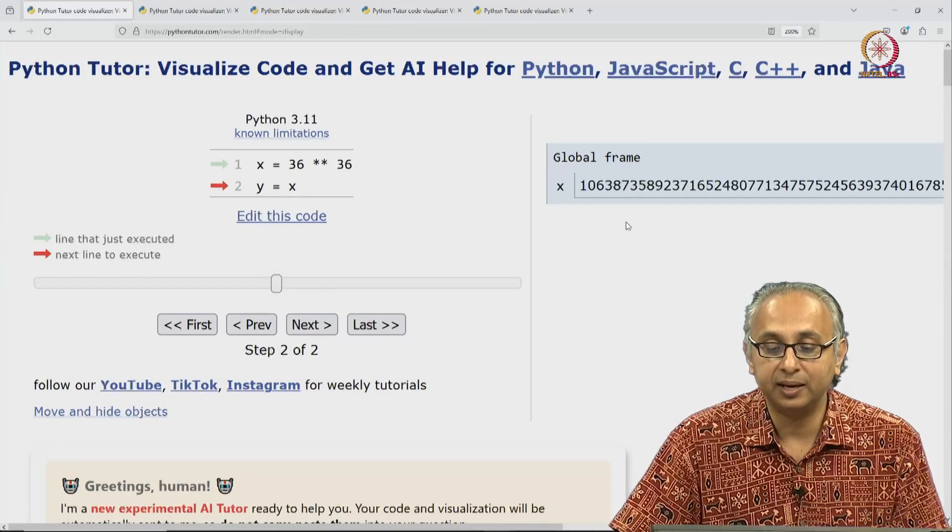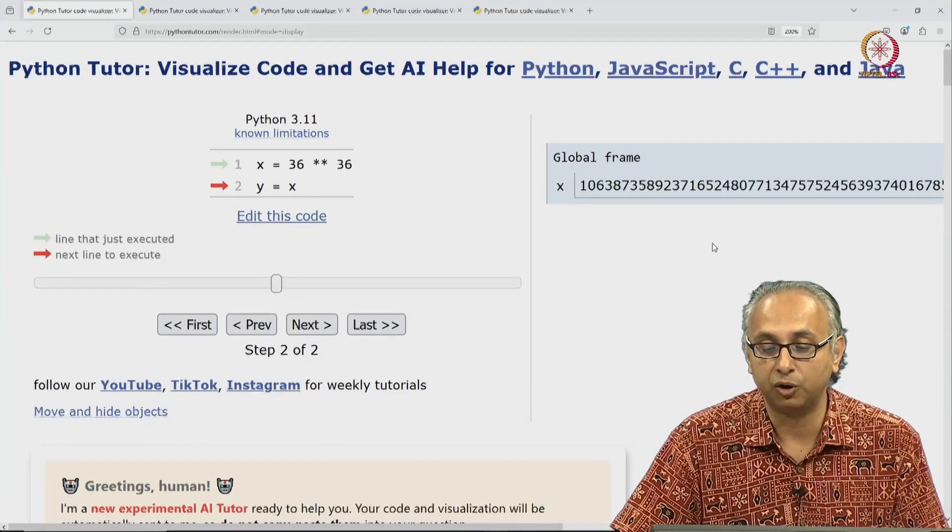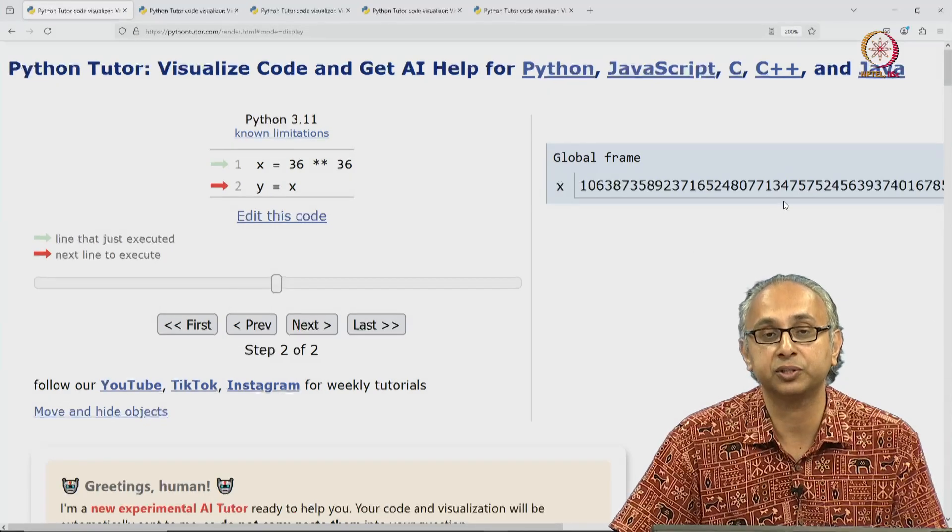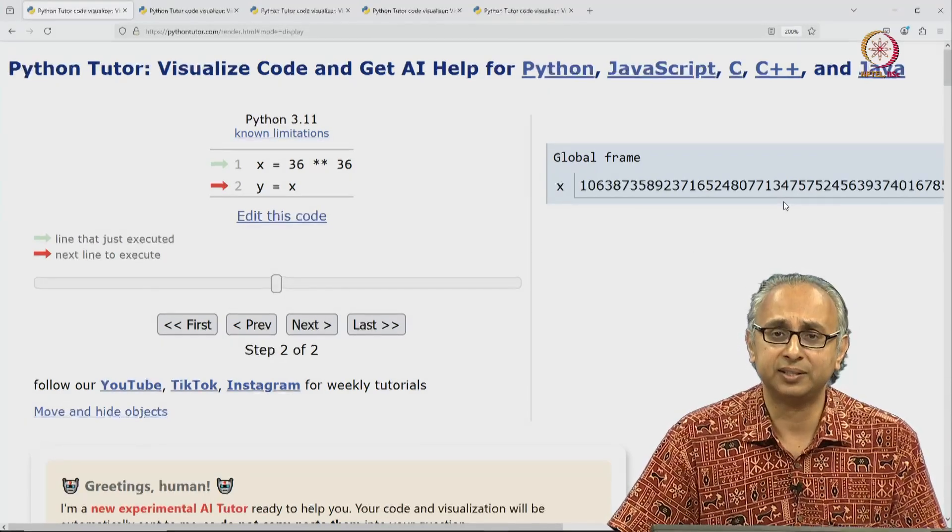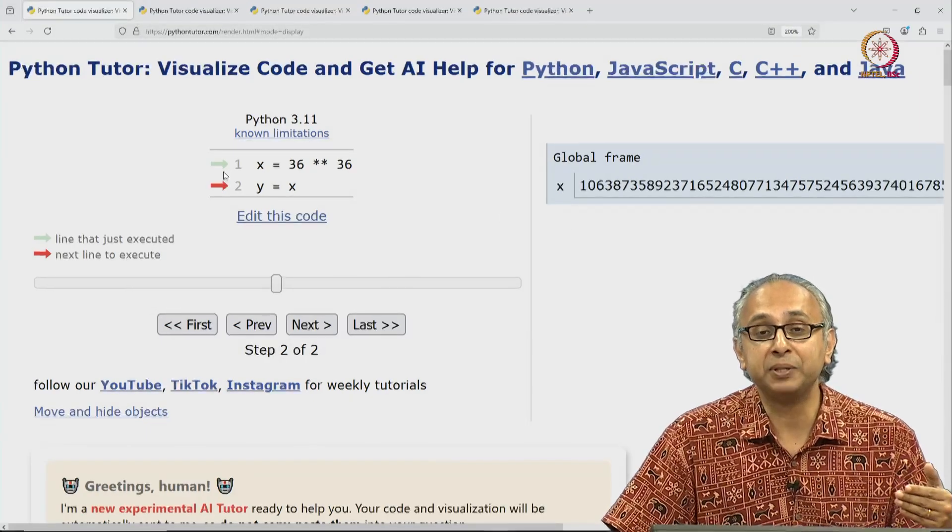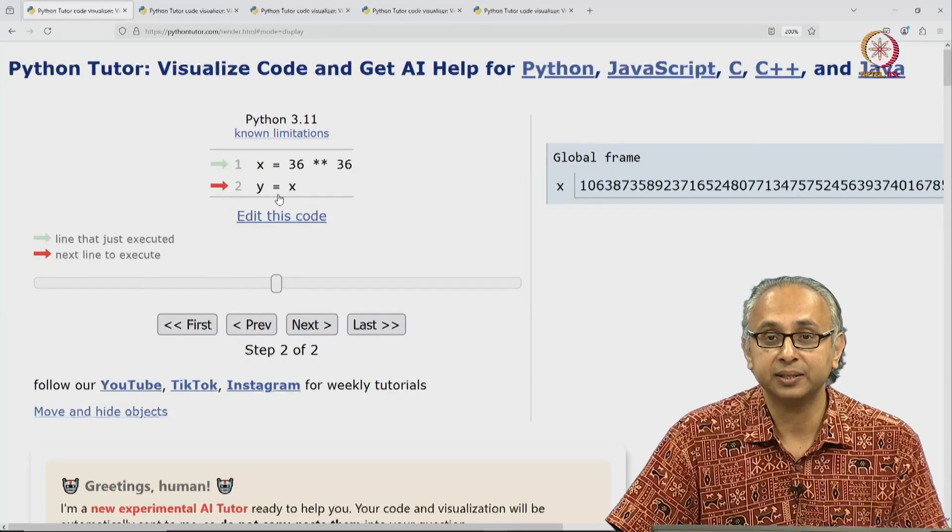On the right hand side, it shows you this x labeling this very large integer object. It's so large that it's not even visible entirely on this screen. That is 36 to the power 36. The green arrow now shows you the statement that just executed and now we're ready to do the second statement.